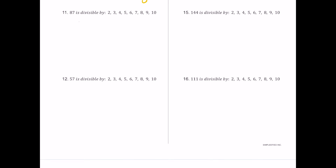For number 11, we have 87. It ends in 7, which is odd, so 2, 4, and 8 fail. If 2 fails, 6 automatically fails, and since all even numbers fail, 10 also fails. The sum 8 plus 7 is 15, a multiple of 3 but not 9. The last digit is 7, not 5 or 0, so 5 fails. For 7, dividing 87 by 7 gives a remainder of 3, so 7 also fails. Only 3 works for 87.